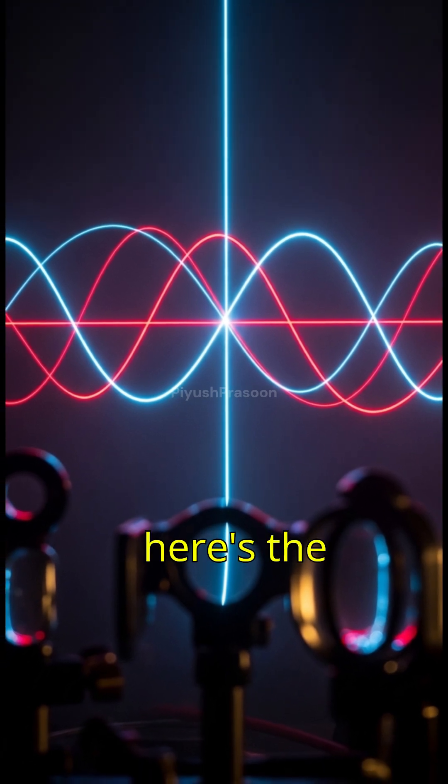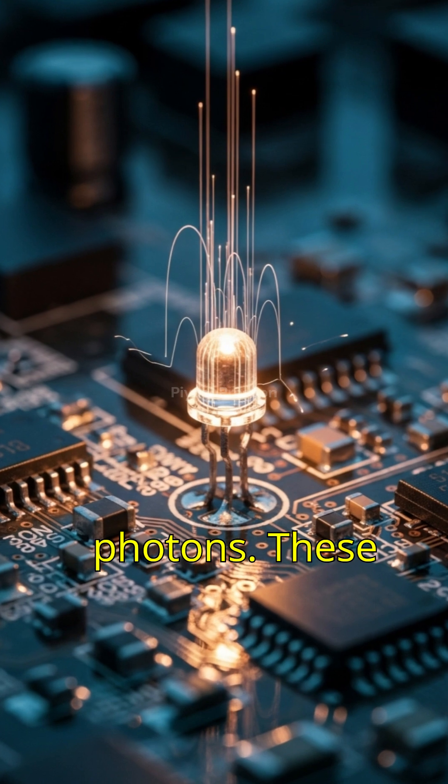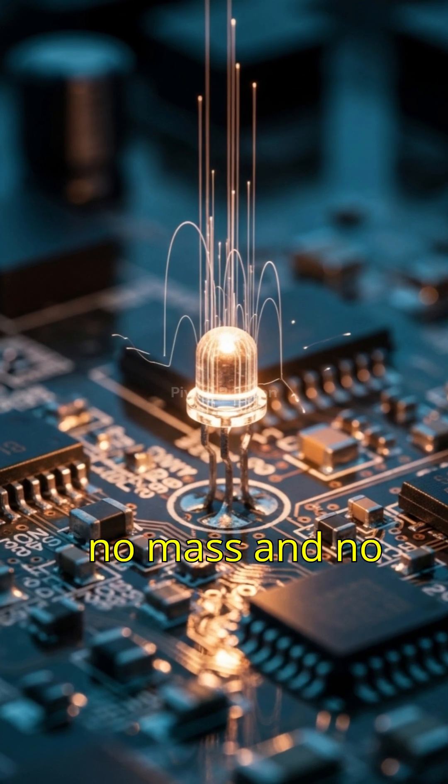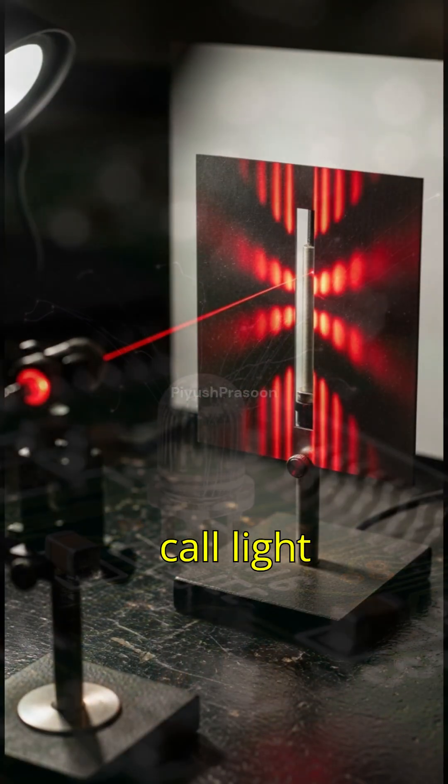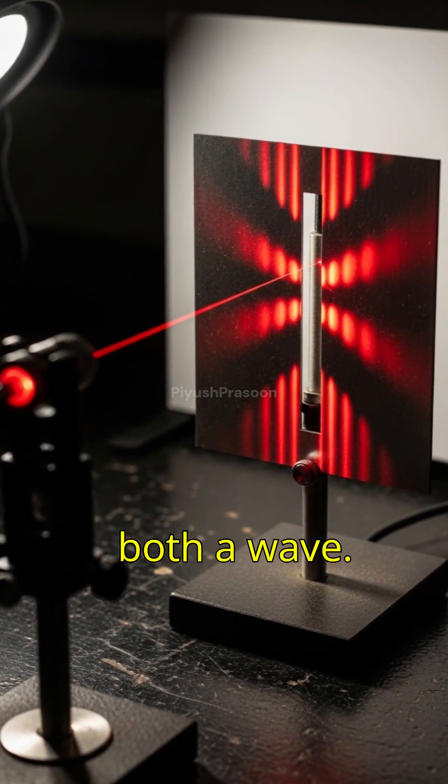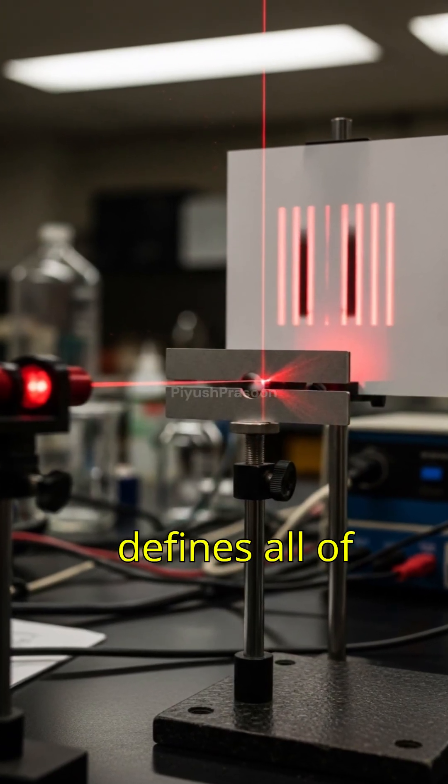But here's the twist. Light also behaves like tiny particles called photons. These photons have no mass and no electric charge, yet they carry energy and momentum. That's why scientists call light both a wave and a particle, a strange dual nature that defines all of quantum physics.